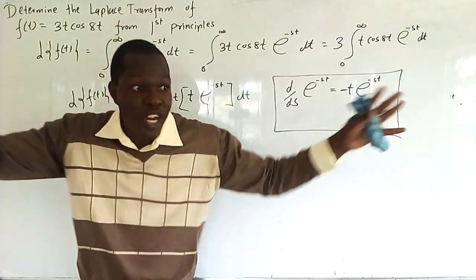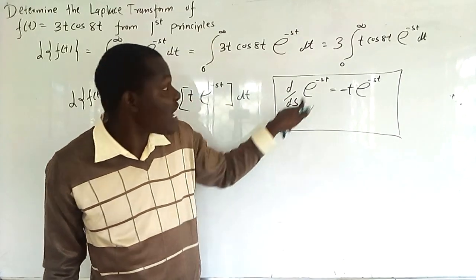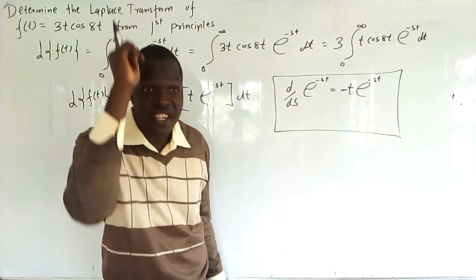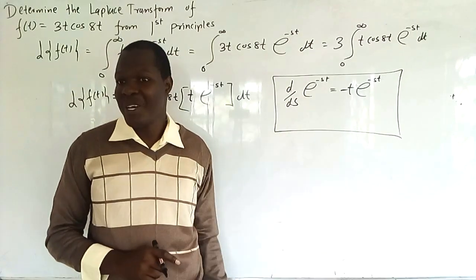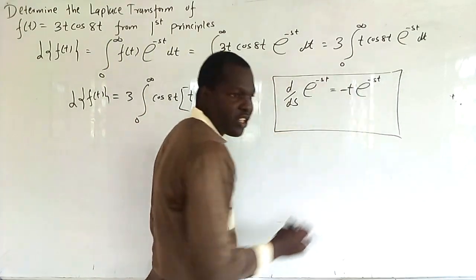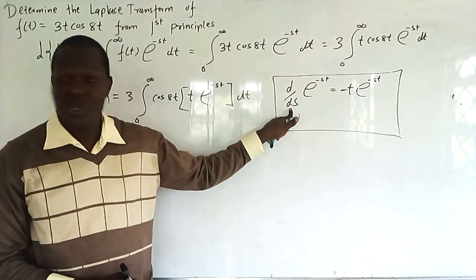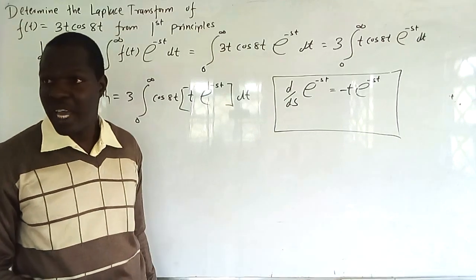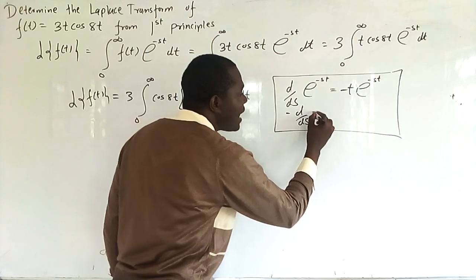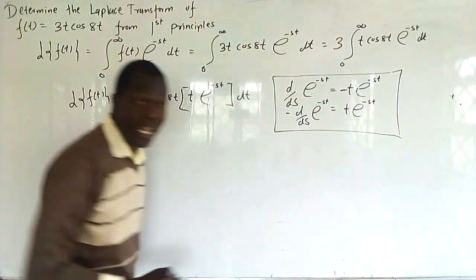You differentiate the outer function and express the others as a product. When differentiating with respect to s, negative t is the constant, then you differentiate s to get 1. So if you multiply both sides by negative, you get: -d/ds of e^(-st) = t·e^(-st). We are using the shift theorem from first principle.